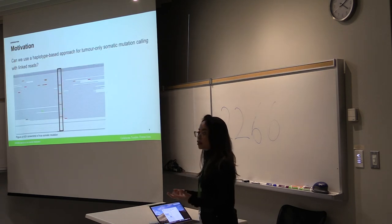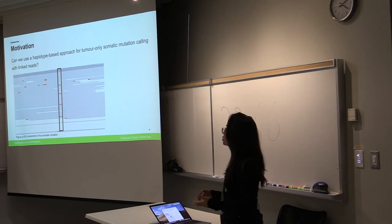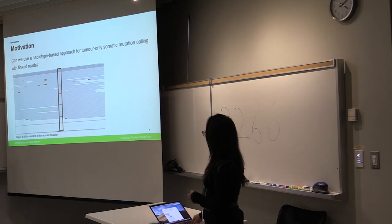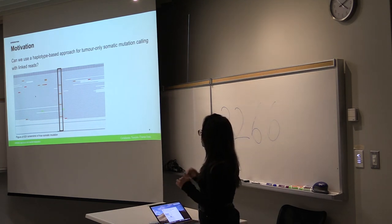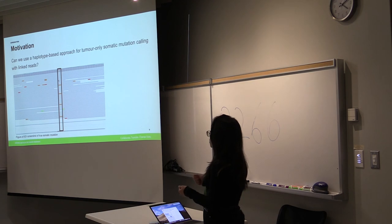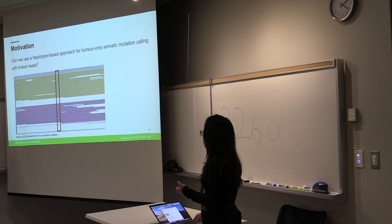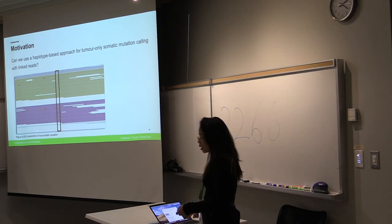So the motivation behind my project is maybe we can use tumor only somatic calling by using haplotype information that's provided by linked reads. In this example here we're looking at an IGV screenshot of the reads aligned to the reference and the genetic differences are highlighted in the different colors and in the center I've highlighted a true somatic mutation. So here again the idea is that we are unable to tell if this is an error but when we phase it by haplotypes, this is haplotype 1 and haplotype 2, we can see that this is a true somatic, or gain more confidence that this is a true somatic mutation.